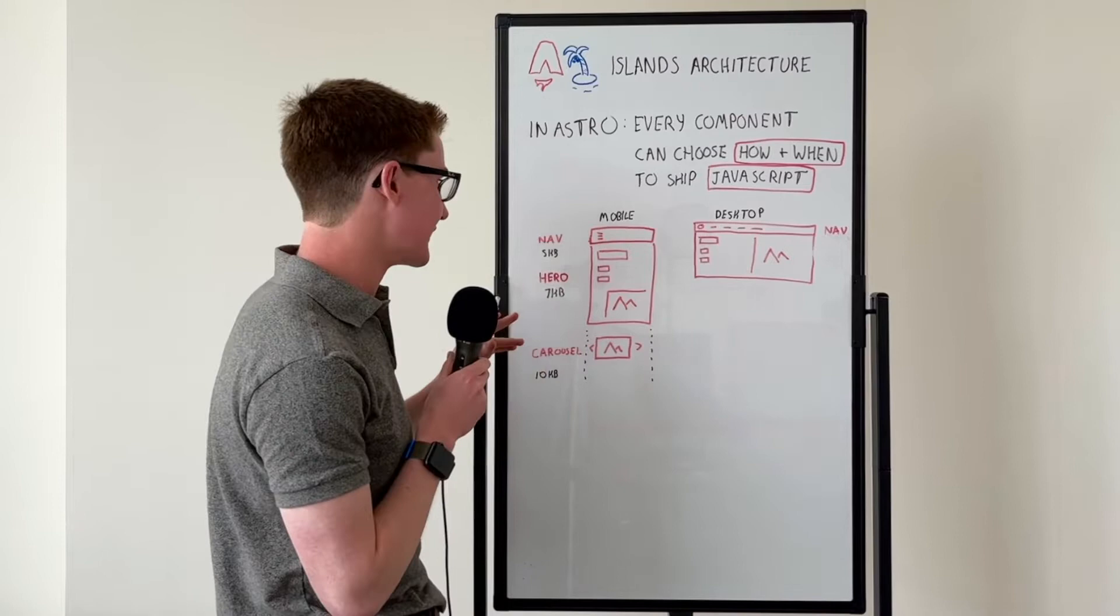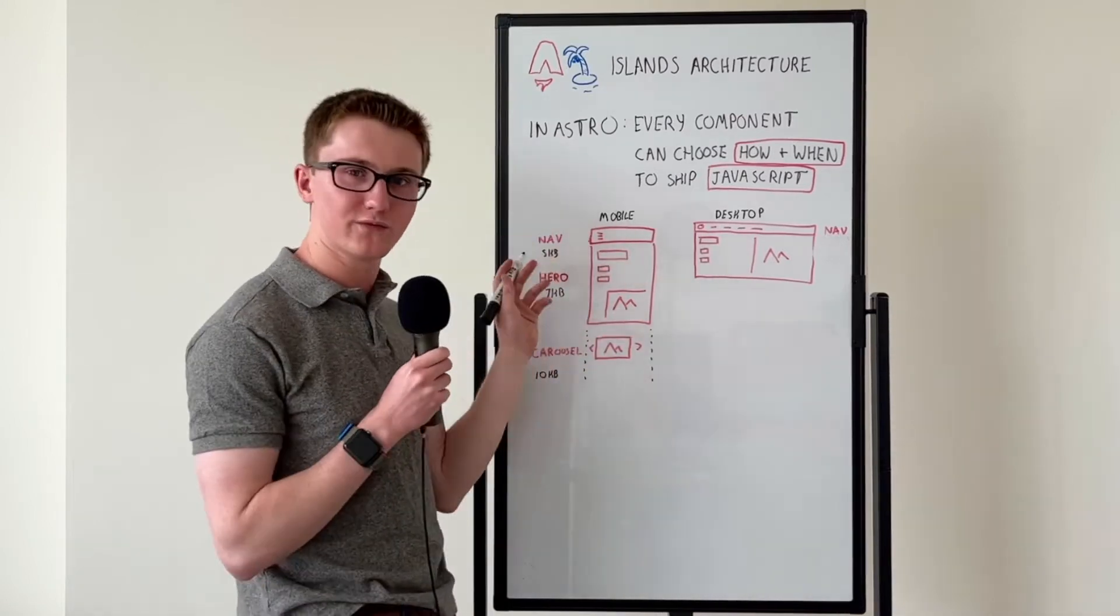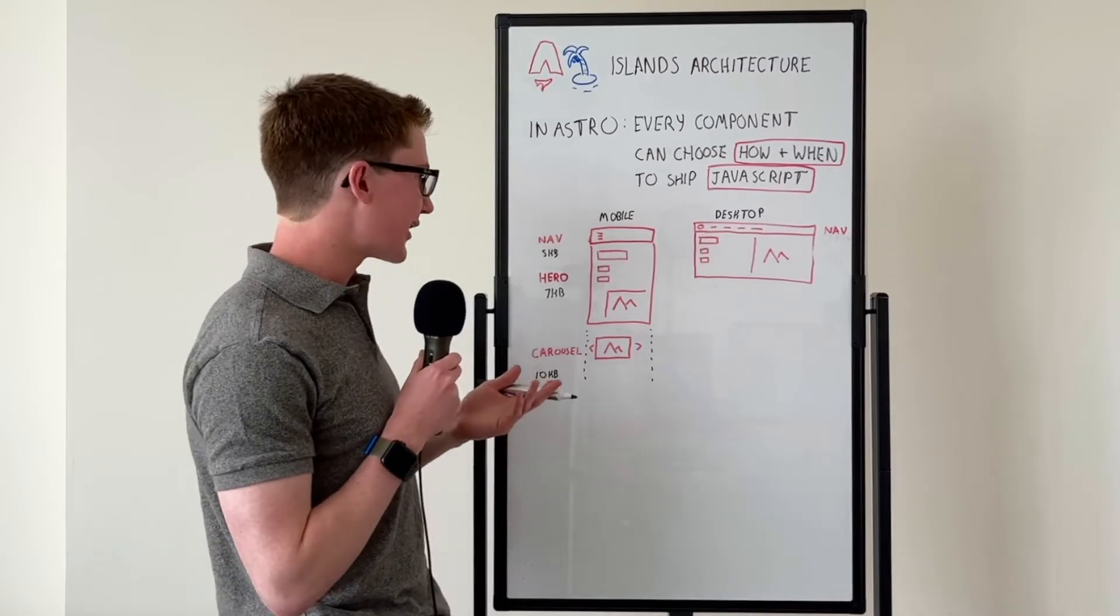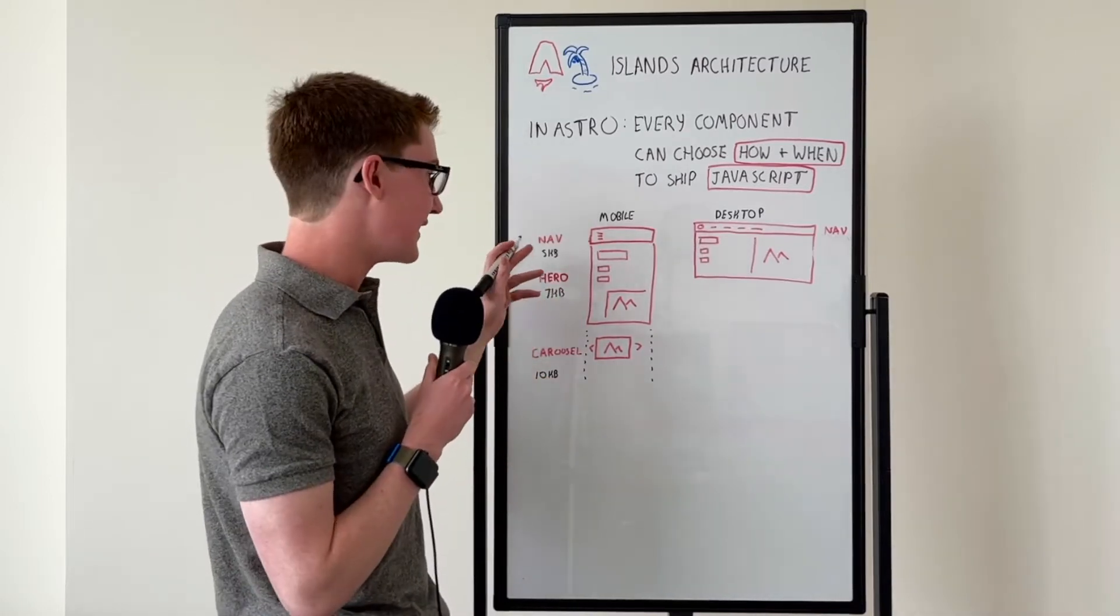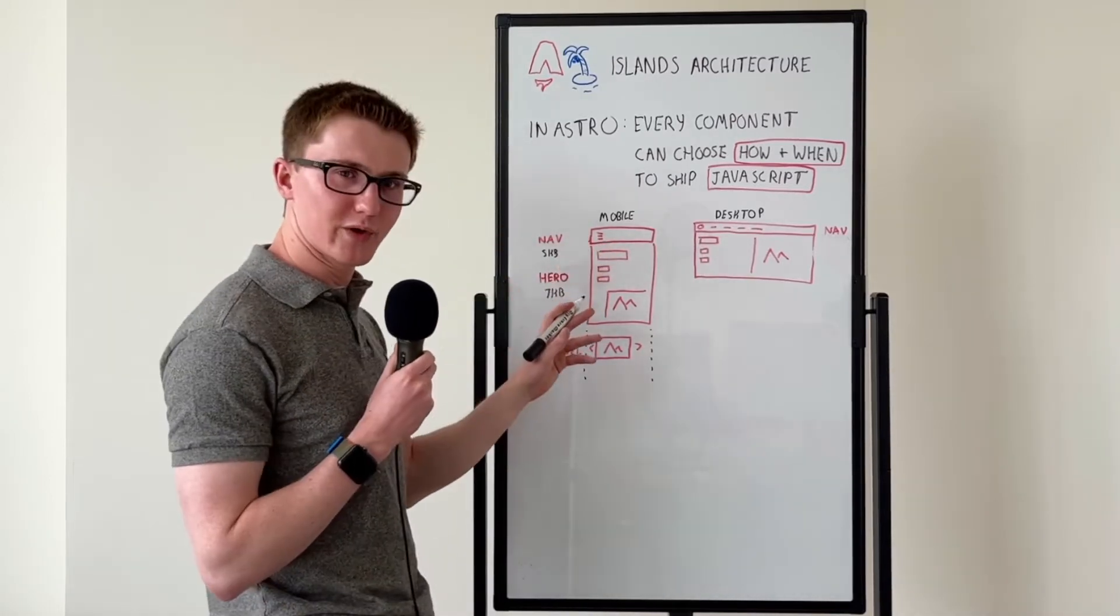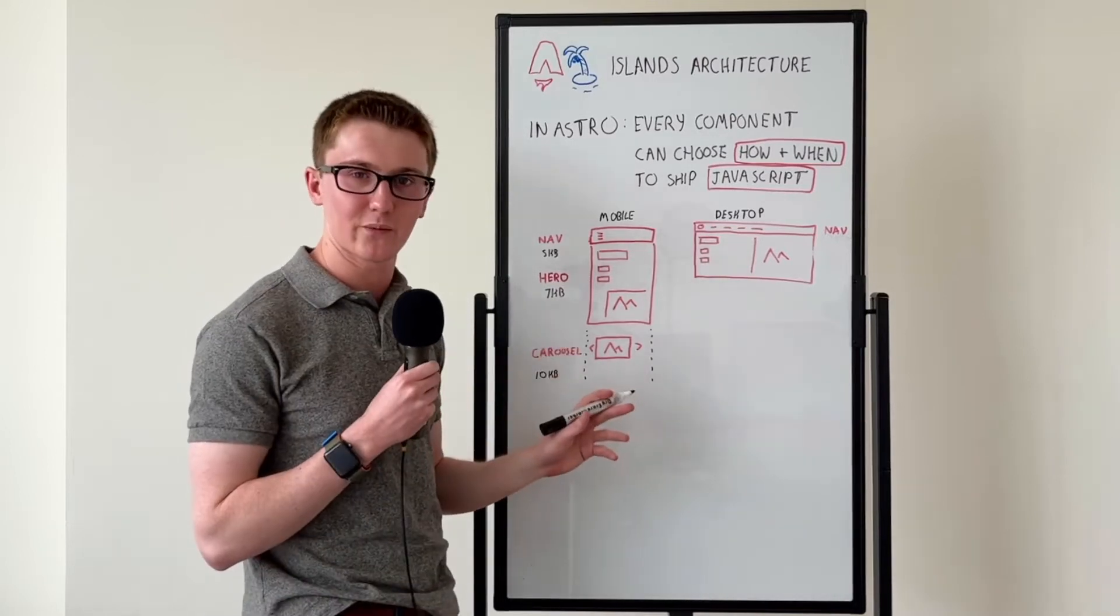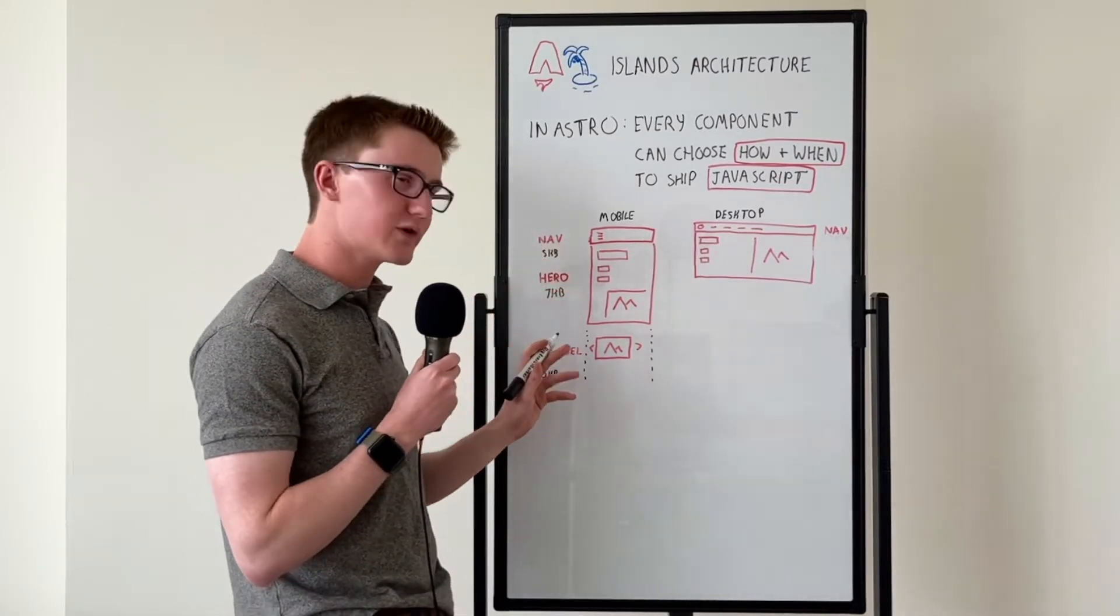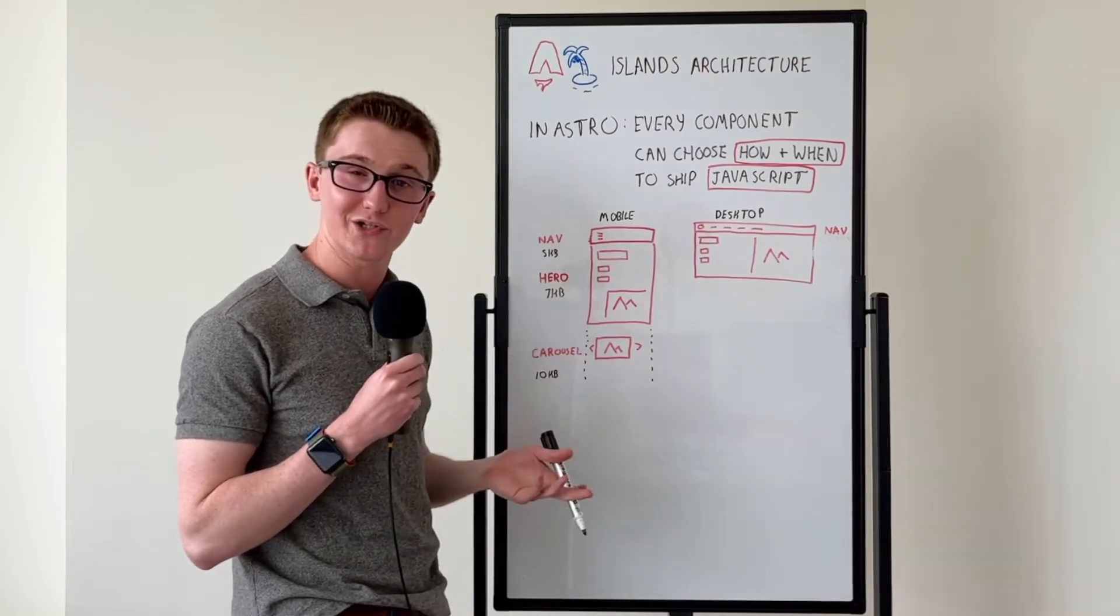Let's explain that with an example. Here I'm trying to build a mobile view with my favorite framework like React, Vue, or Svelte, so I'm going to break it down with components. I have a nav component here, a hero component, and an image carousel. Traditionally, each of these are going to have a JavaScript bundle associated with them that you don't have much control over.